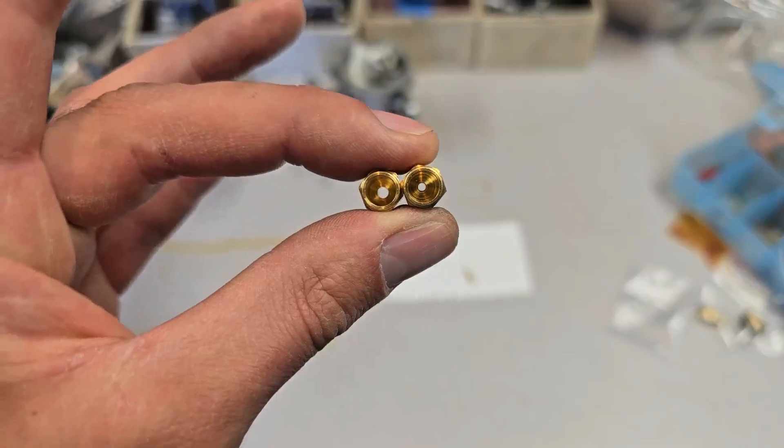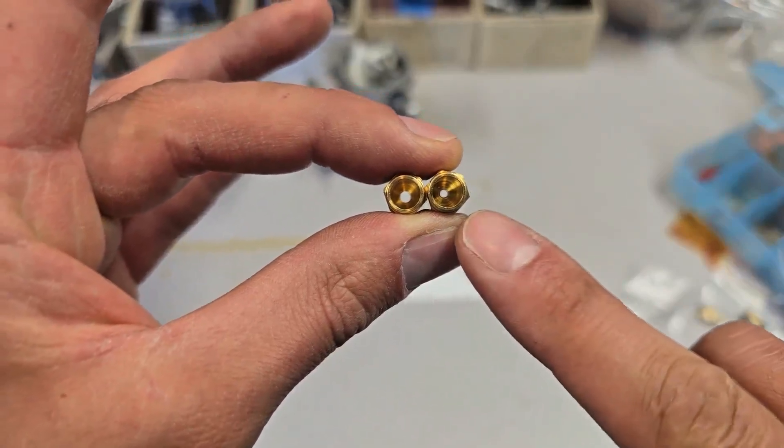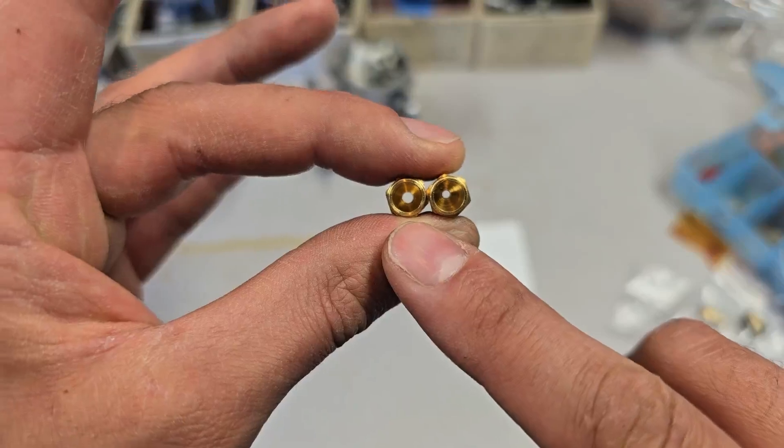So here we can see the difference between the 70 thou and the 96 thou. The 70 thou jet is on the right, the 96 thou jet is on the left.